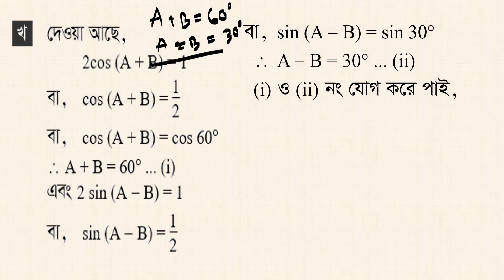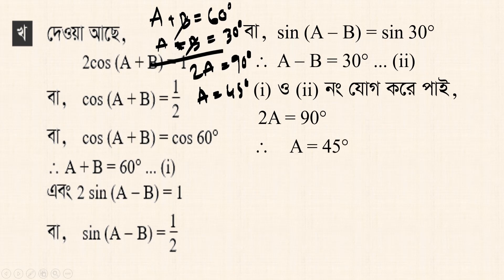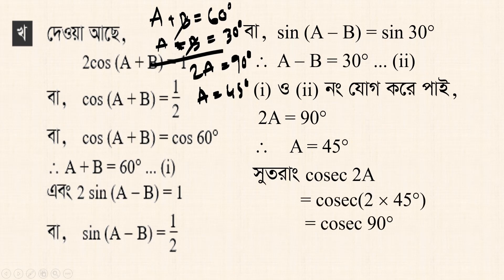Adding the two equations: 2a equals 60 plus 30 equals 90, so a equals 45 degrees. Now cosec 2a equals cosec of 2 times 45 degrees equals cosec 90 degrees. cosec 90 degrees equals 1.